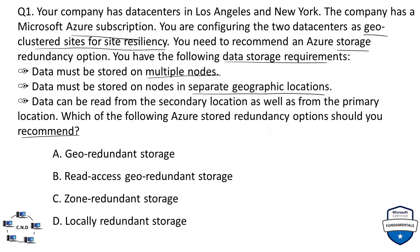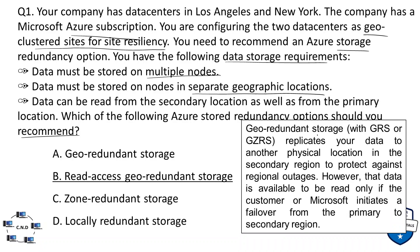Which Azure storage redundancy option should you recommend? Option A: Geo-Redundant Storage. Option B: Read Access Geo-Redundant Storage. Option C: Zone Redundant Storage. Option D: Locally Redundant Storage. The correct option is Read Access Geo-Redundant Storage (RA-GRS). GRS or GZRS replicates your data to another physical location in the secondary region to protect against regional outages. However, that data is available to be read only if the customer or Microsoft initiates a failover from the primary to the secondary region.